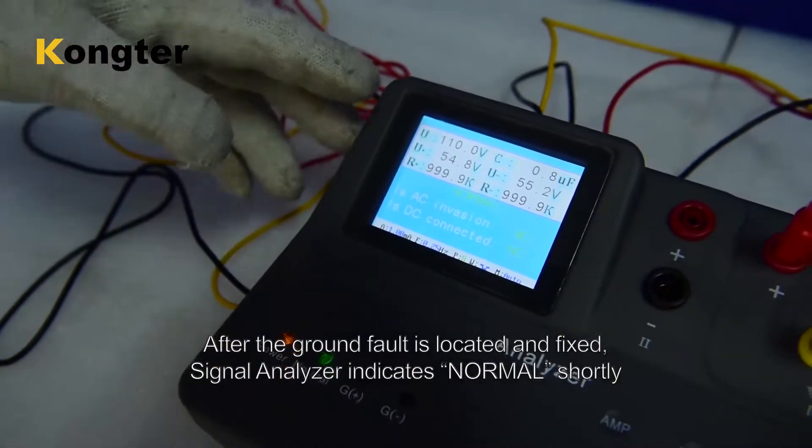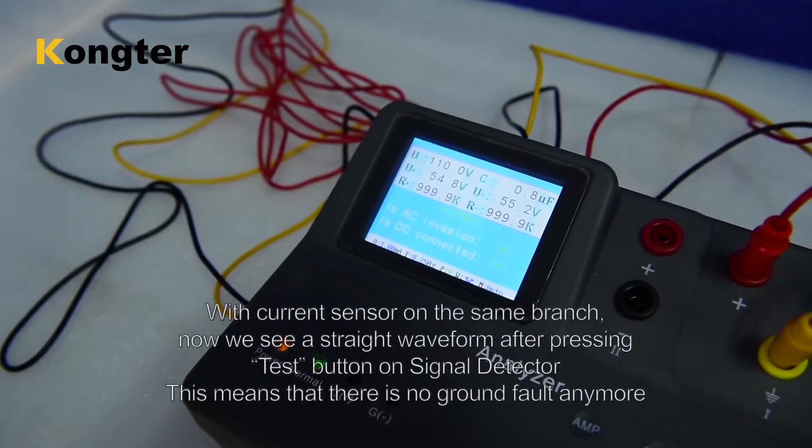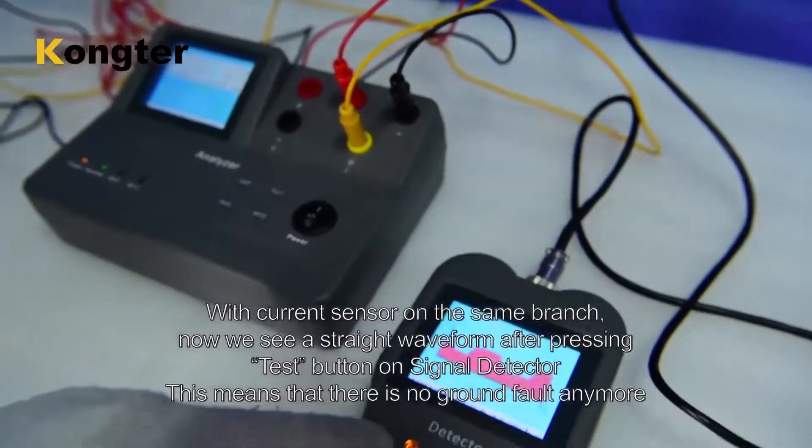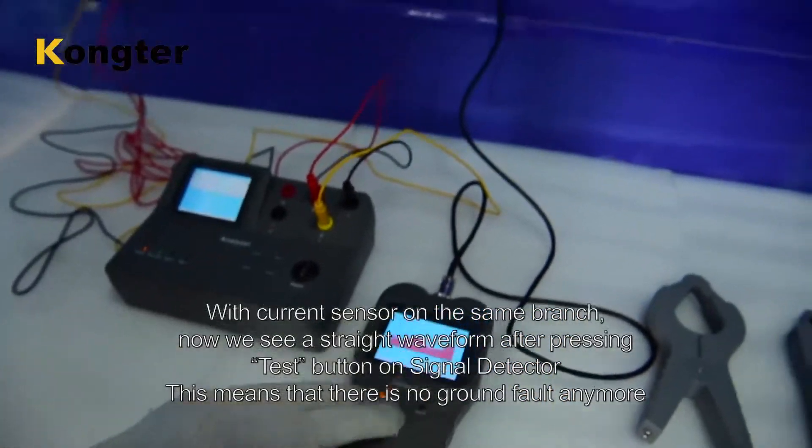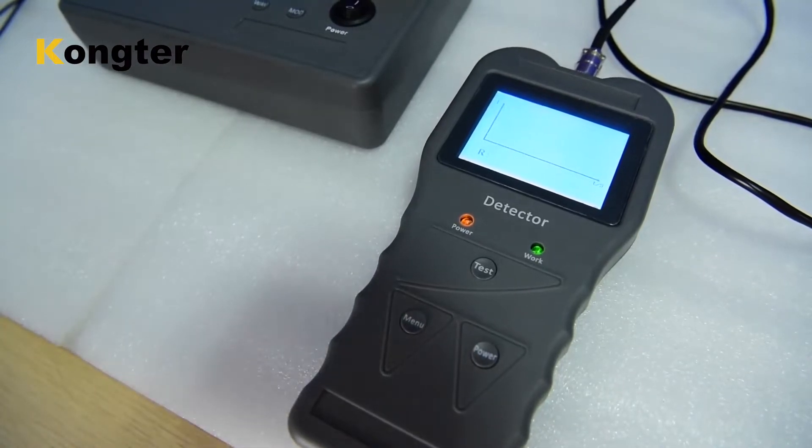After the ground fault is located and fixed, signal analyzer indicates normal shortly. With current sensor on the same branch, now we see a straight waveform after pressing test button on signal detector. This means that there is no ground fault anymore.